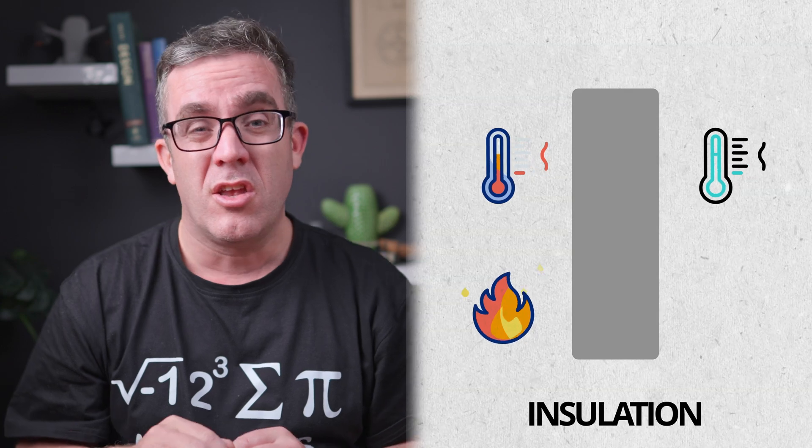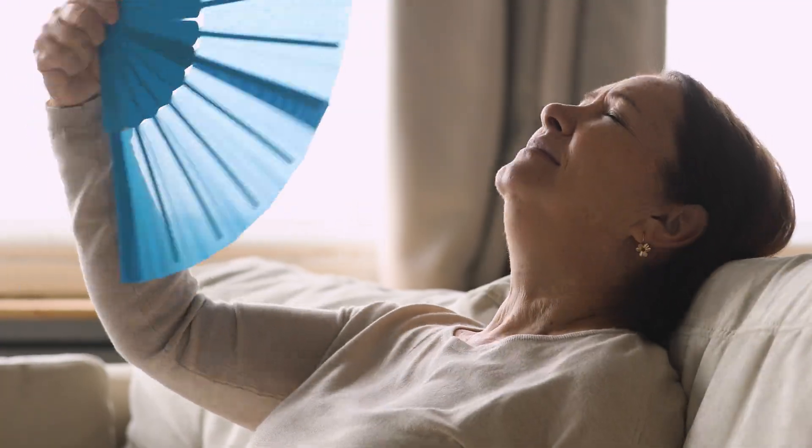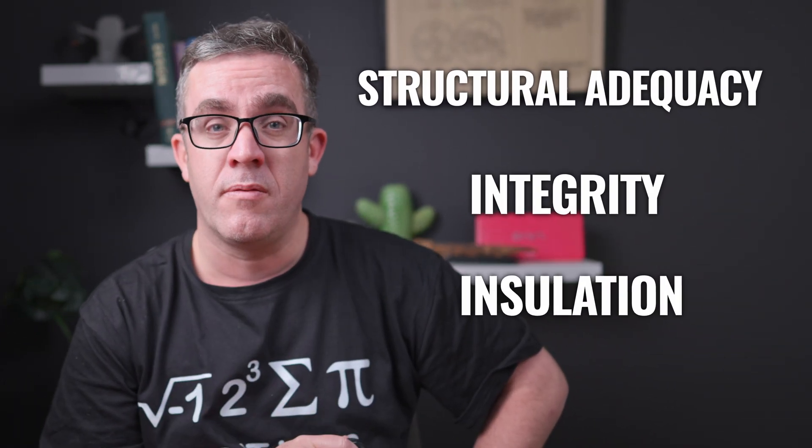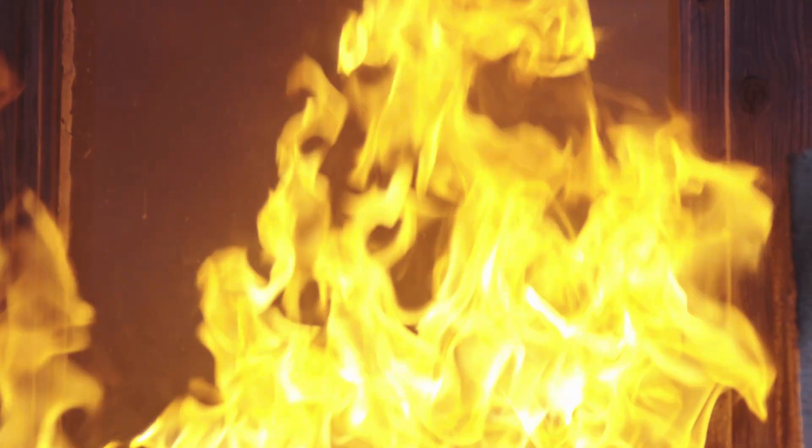Lastly, insulation — it needs to prevent heat transmission from one area to another. You don't want to turn your structure into a giant oven, cooking the people inside by transferring heat through the structure. A key aspect of insulation is also making sure it doesn't transmit heat through and set something else on fire. Similar to integrity, you don't actually need the flame to come through to set something else on fire — just direct heat, if it's hot enough, can set the other room on fire by transmitting through the structure.